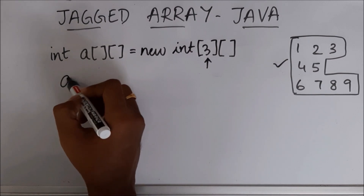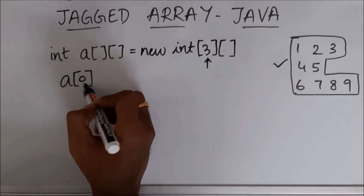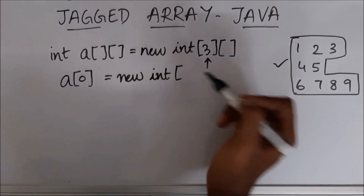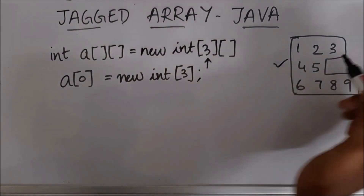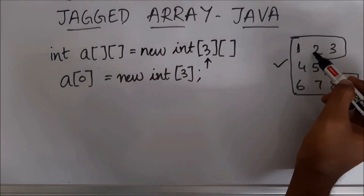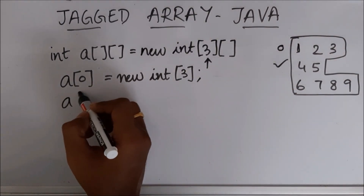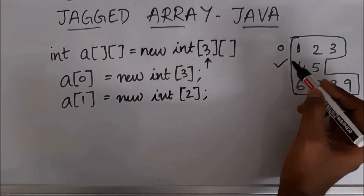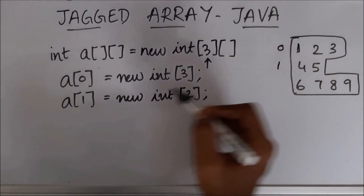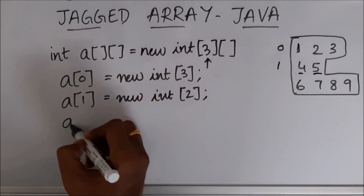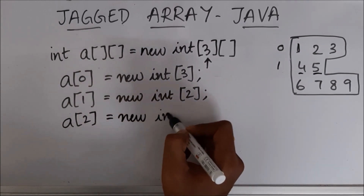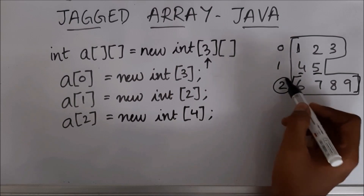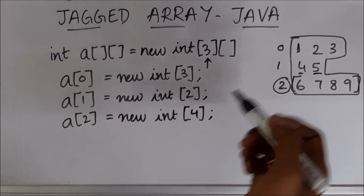Next, we tell this 2D array that row number 0 should contain a 1D array: a[0] = new int[3]. This creates a 1D array of size 3 at row 0. Then a[1] = new int[2], creating an array of size 2 at row 1. And a[2] = new int[4], creating a 1D array of size 4 at row 2. This is how we create the jagged array.